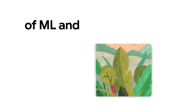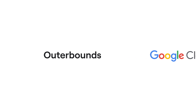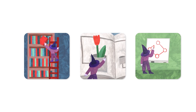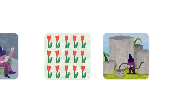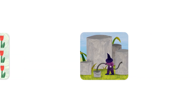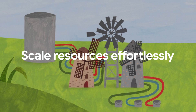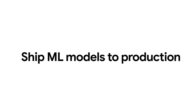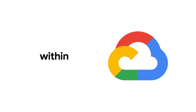Push the boundaries of ML and AI development. Outer Bounds on Google Cloud simplifies the deployment of secure, production-ready ML app systems, saving you time while keeping costs low. Access your own data easily, scale compute resources effortlessly, and ship ML models to production confidently — all within your Google Cloud environment.